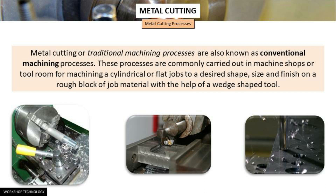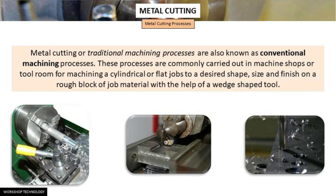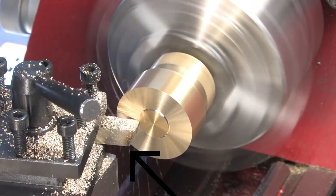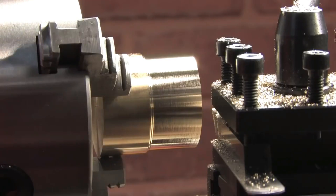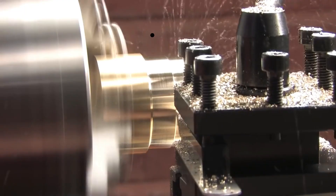Metal cutting or traditional machining processes are also known as conventional machining processes. These processes are commonly carried out in a machine shop or tool room for machining a cylindrical or flat job to a desired shape, size, and finish on a rough block of job material with the help of a wedge-shaped tool. The cutting tool is constrained to move relative to the job in such a way that a layer of metal is removed in the form of a chip.